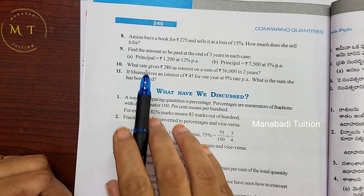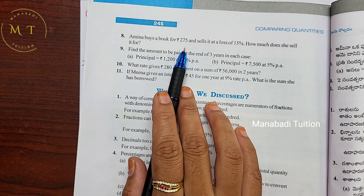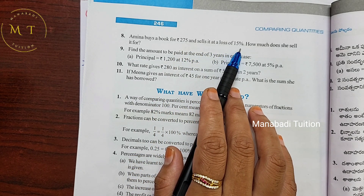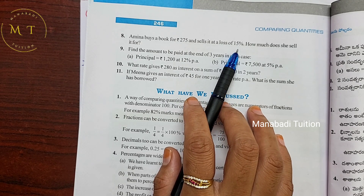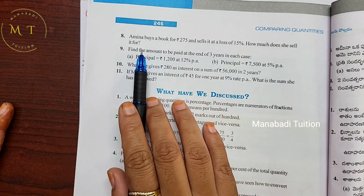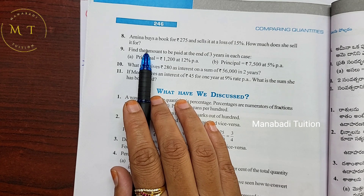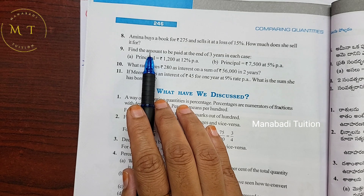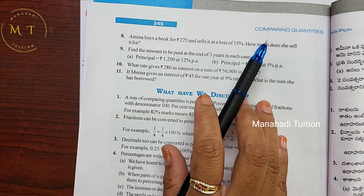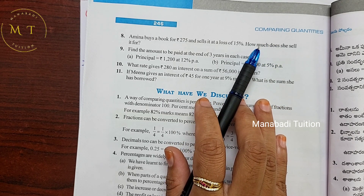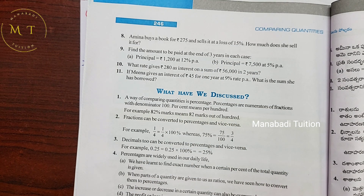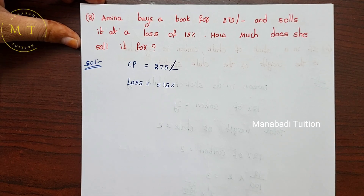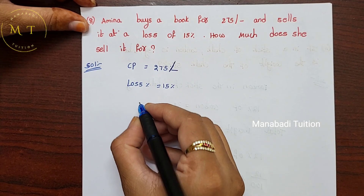Question number 8: Amina buys a book for 275 rupees. The loss percentage is 15%. We need to find out the selling price.